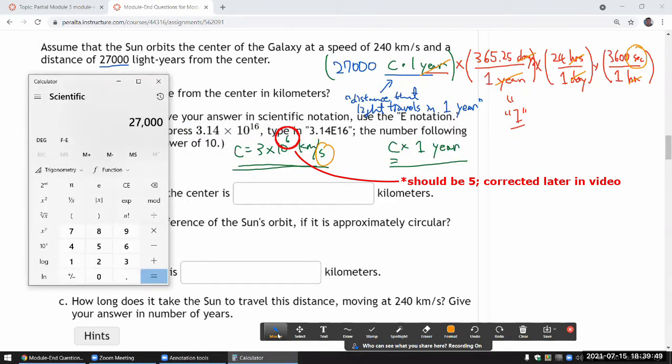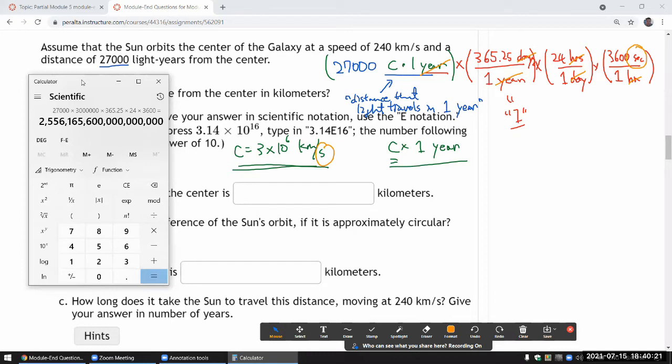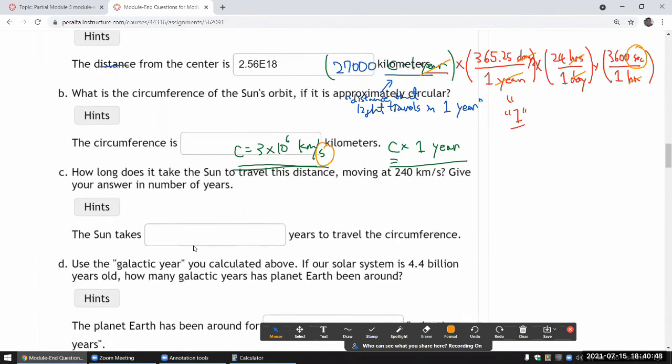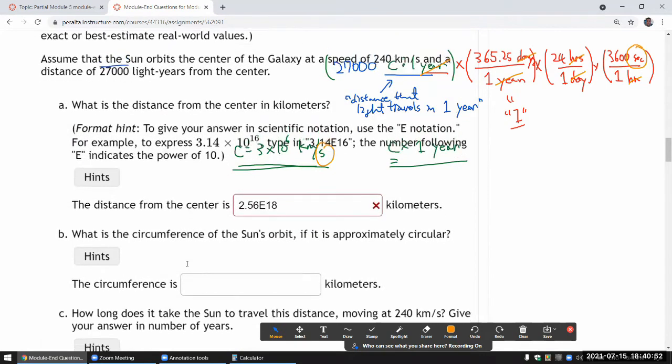So let me just do that. 27,000 light years times speed of light C, that's 3 times 10^6 kilometers per second. Make sure you know how to use your scientific calculator. This is the E notation that lets you type in the 10 to the power of compactly. Times 365.25 times 24 times 3,600 equals that big number. I can convert this to scientific notation: 2.56 times 10^18 kilometers. Let me submit it to make sure that it is. It's not. Did I forget something?